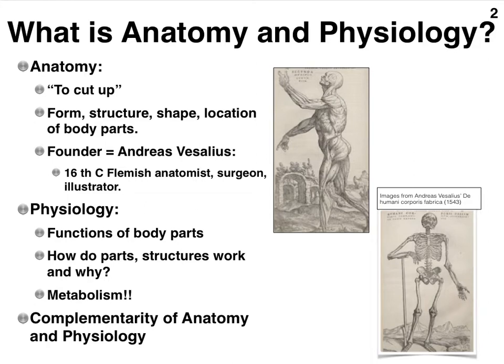Anatomy is really a part of biology that focuses on what structures in our body look like. Keywords: form, structure, shape, as well as location. And when we say body parts, we're not just saying structures that we can see with the bare eye. These are also structures that are only visible with a microscope, whether it's your ordinary compound microscope or a more specialized microscope, like an electron microscope.